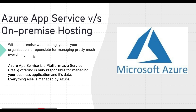Let's learn why to use Azure App Service over on-premises hosting. With on-premises web hosting, you or your organization is responsible for managing pretty much everything — procuring physical servers, storage, networking equipment, hardware, power supply, backup power, and cooling systems. You also need to configure virtualization, operating systems, and install web servers like IIS, Apache, or Nginx.